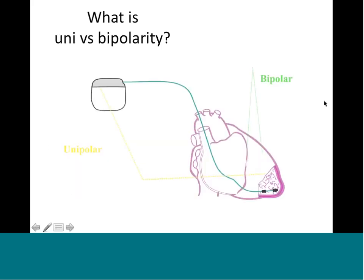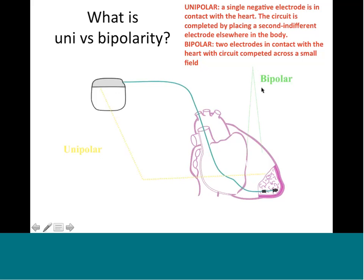When we talk about pacemakers, what is unipolar versus bipolar? In unipolar, you've got a single negative electrode in contact with the heart, and then your circuit is completed with an electrode elsewhere in the body. For instance, when you put pacemakers in the post-op period, you put one electrode on the heart and a second electrode outside in the body, and that's how the circuit gets completed.